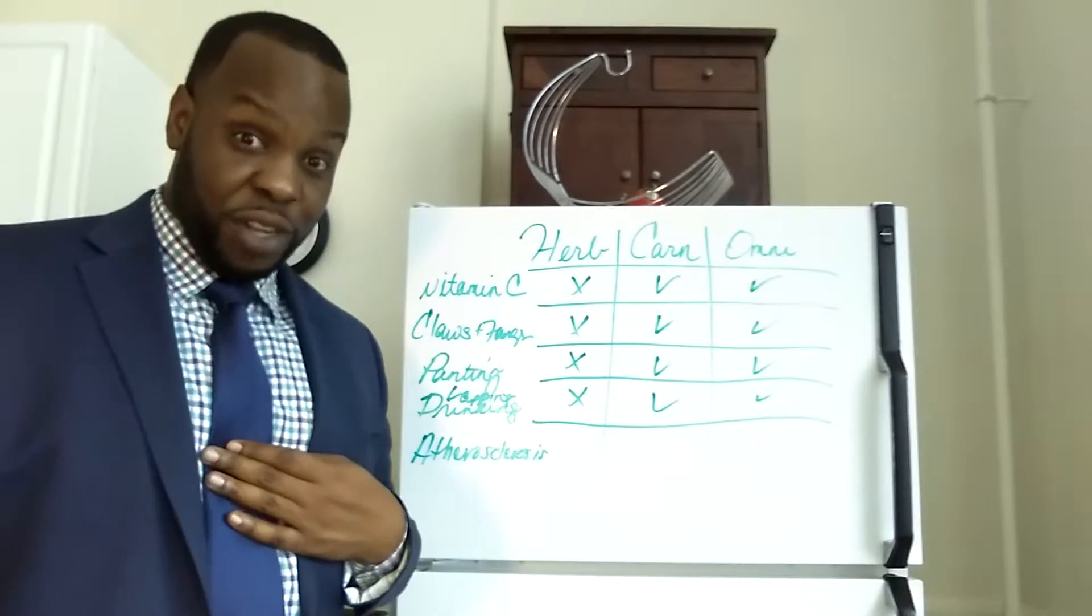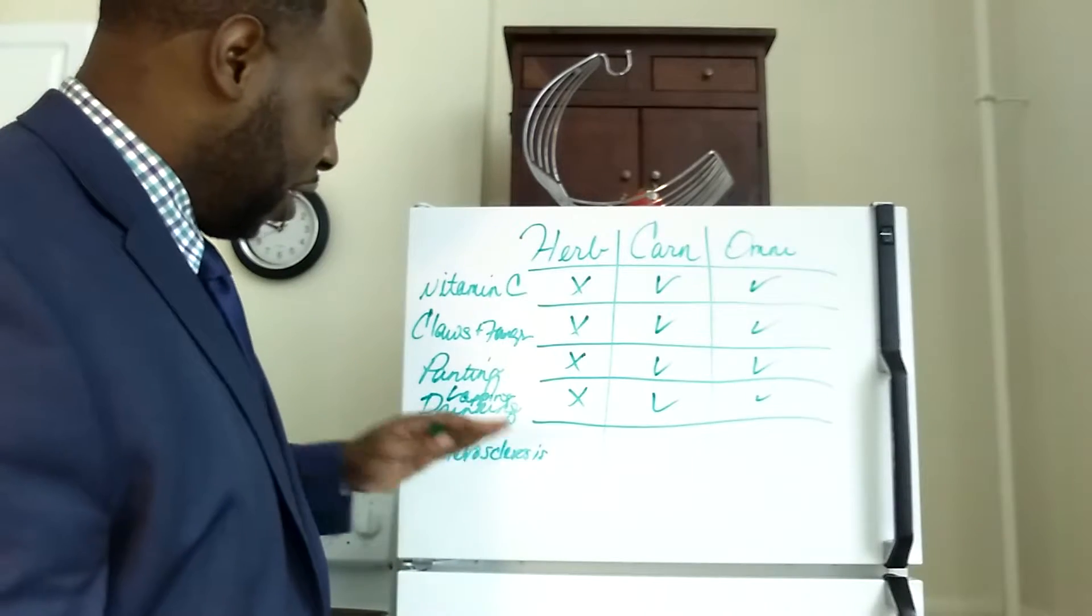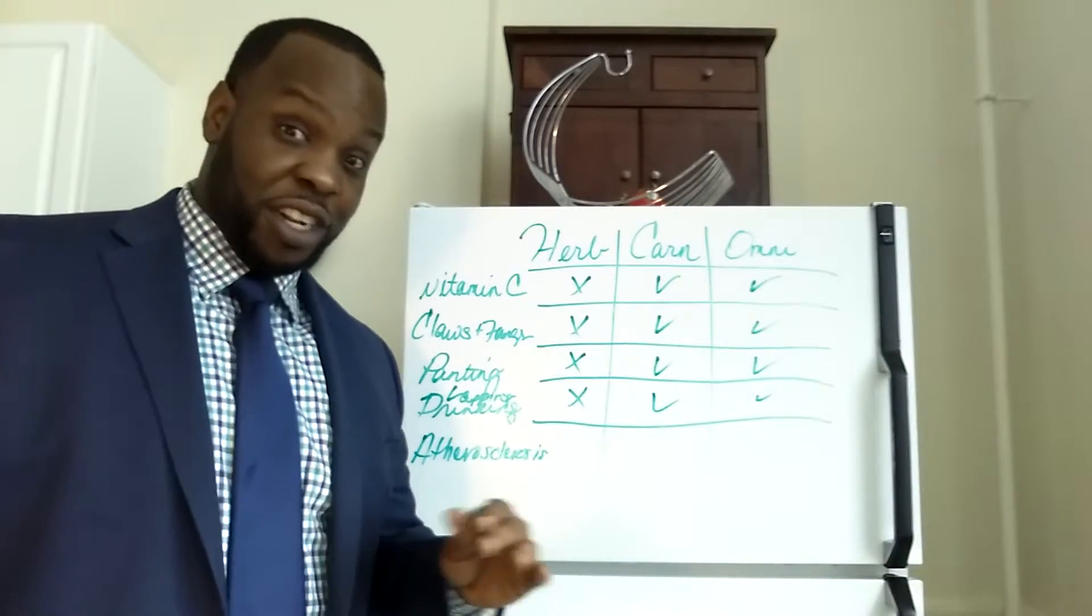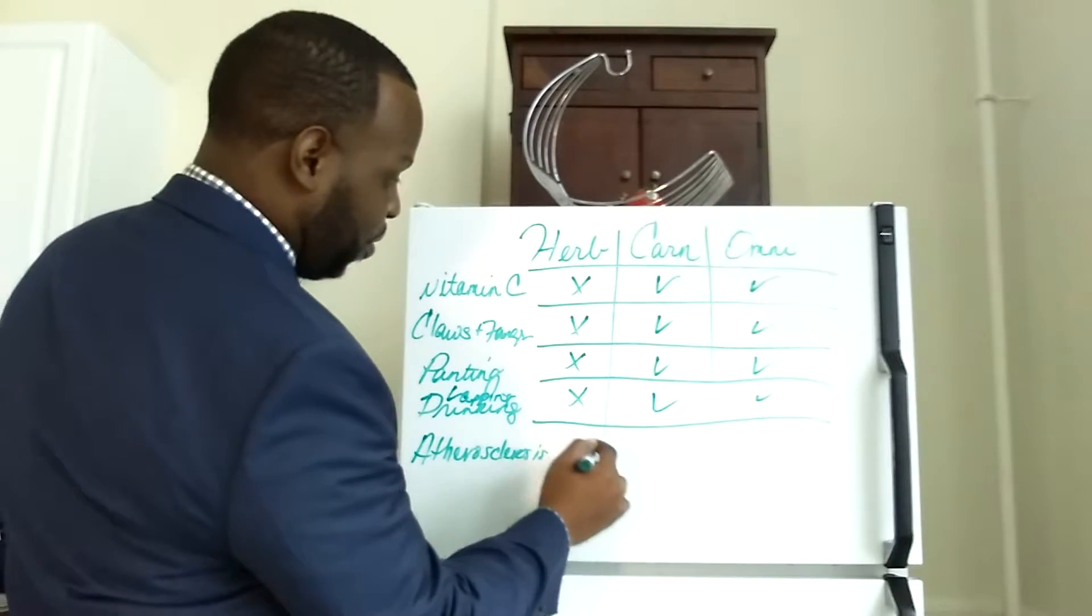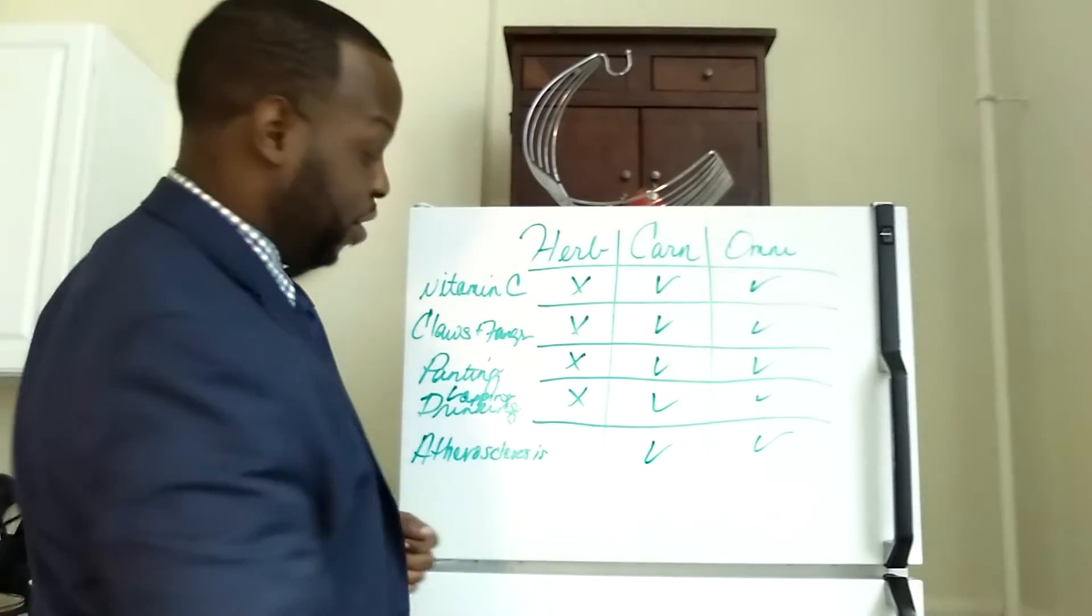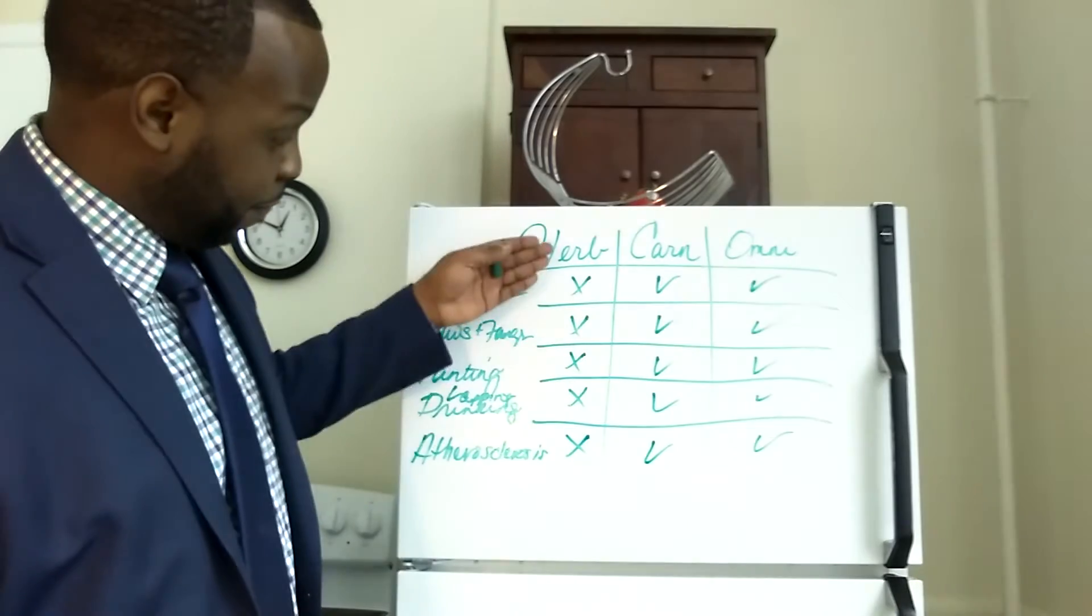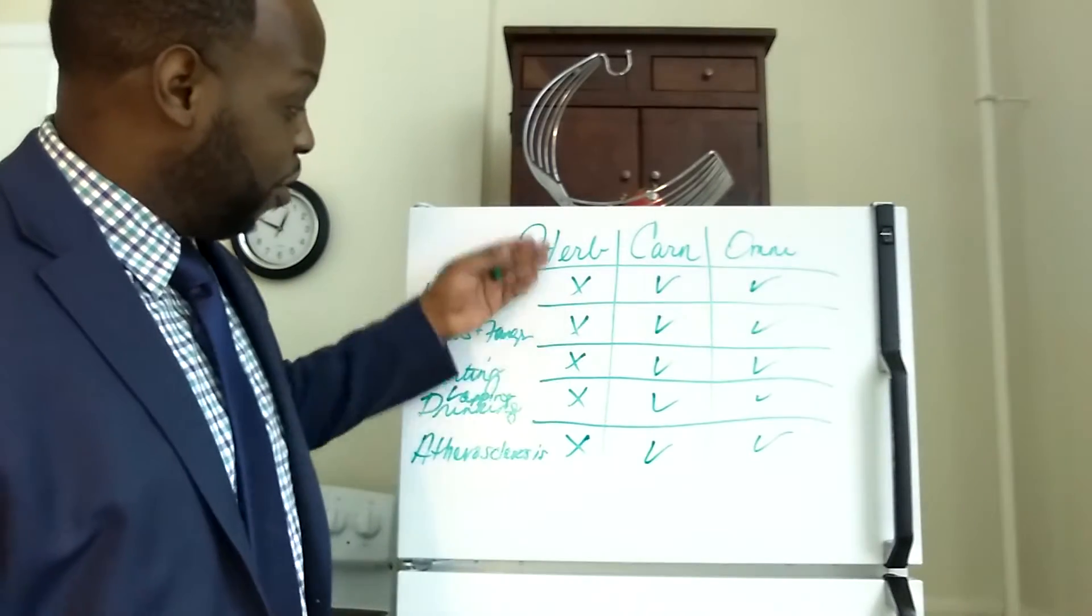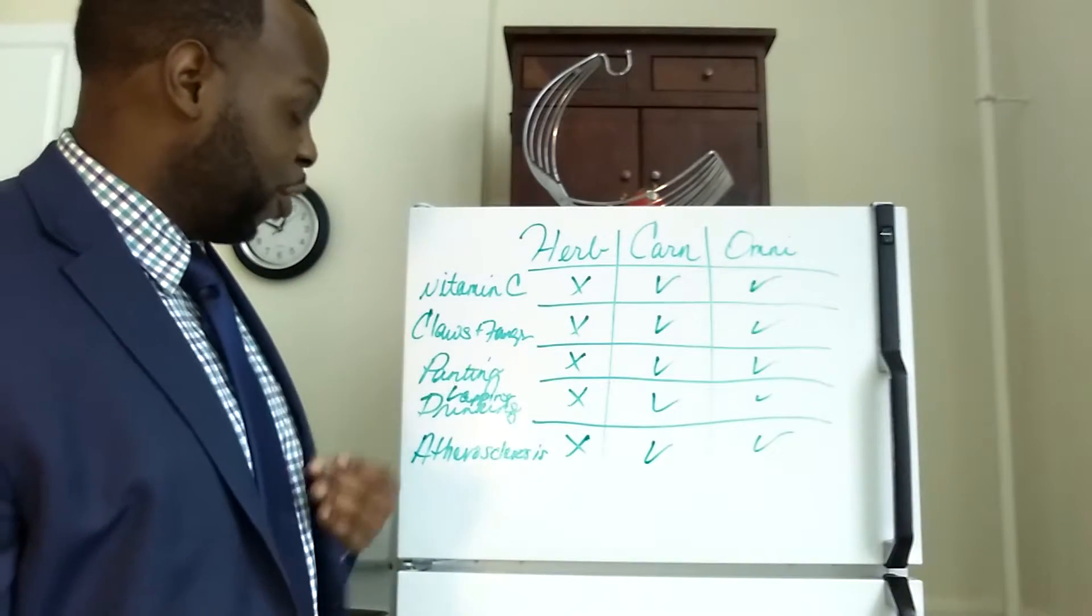Now humans, do we develop atherosclerosis? Yes, we do, because it is the number one killer. The number one killer in this country and in the world is atherosclerosis. So carnivores do not develop atherosclerosis and herbivores do. You see where all the evidence is pointing? It is starting to become clear. All of the evidence shows that we are herbivores.